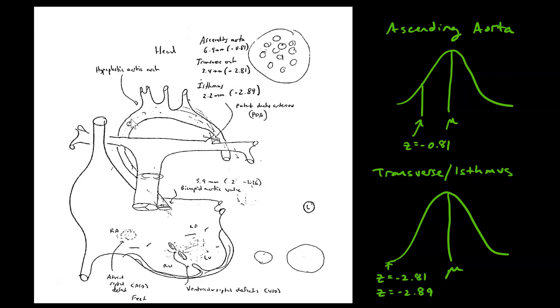Remember earlier in the class we talked about how a lot of physical characteristics follow that bell curve distribution. Well, that's true with the width of newborn babies' aortas as well.